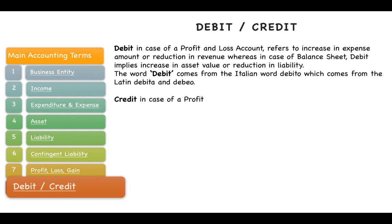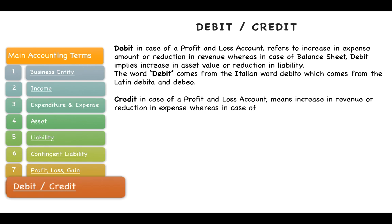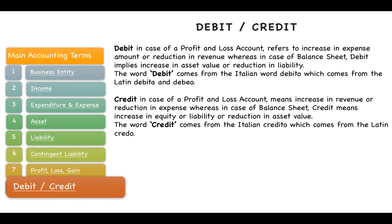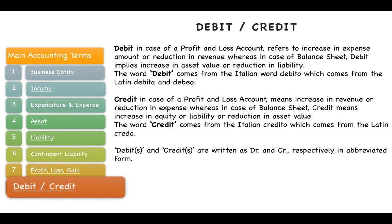Credit is just the opposite. In a profit and loss account, credit means an increase in revenue or a reduction in expense. In a balance sheet, credit means an increase in equity or liability, or a reduction in asset. The word credit comes from the Italian 'credito,' derived from the Latin 'credo.' Debits and credits are written as Dr. and Cr. respectively in abbreviated form.